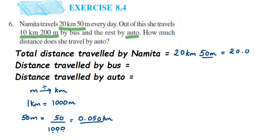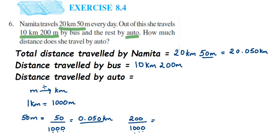Next, the distance traveled by bus is 10 kilometers and 200 meters. We convert 200 meters into kilometers by dividing by 1000. Three digits in the denominator, so placing the decimal after three digits from the right: zero, zero, two, then decimal, then zero — giving 0.200 kilometers. So 10 kilometers plus 0.200 kilometers equals 10.200 kilometers.